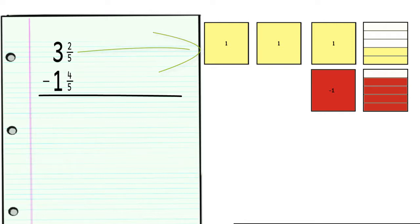Looking back at the problem, you will notice that both fractions have a common denominator of five. That means the whole was cut into five equal-sized pieces. If we just look at the fraction part, we have two-fifths of a piece, but we need to take away four-fifths.